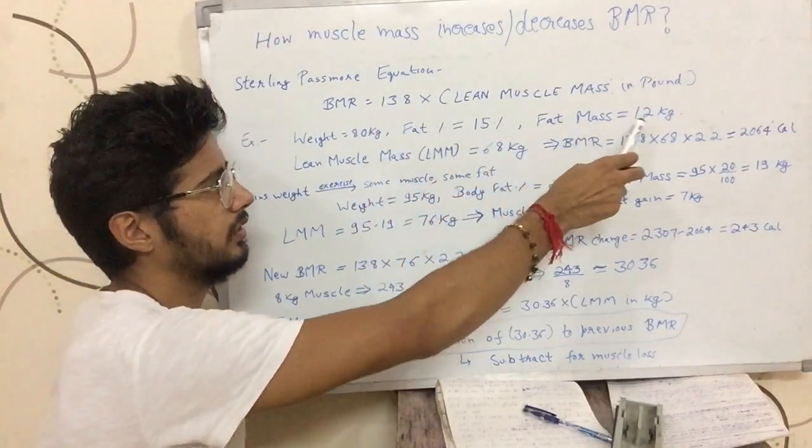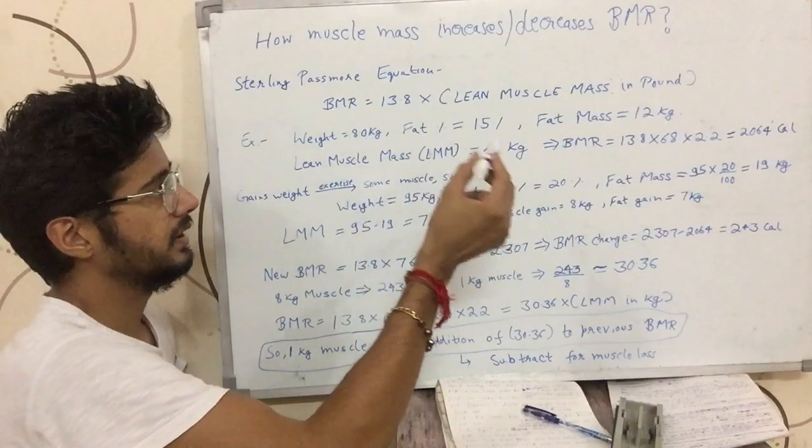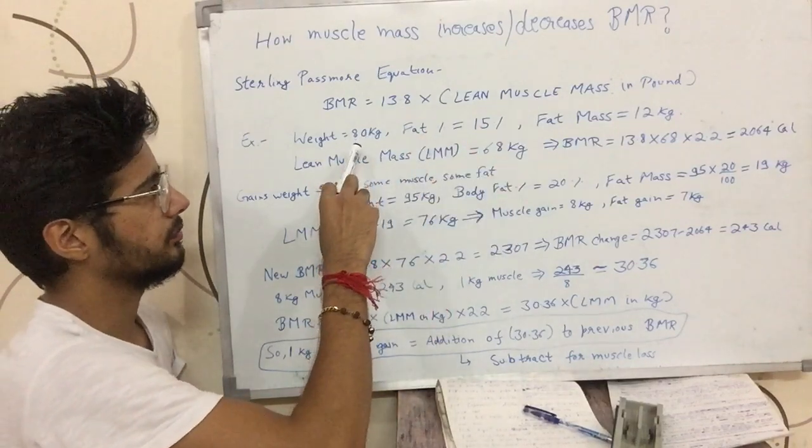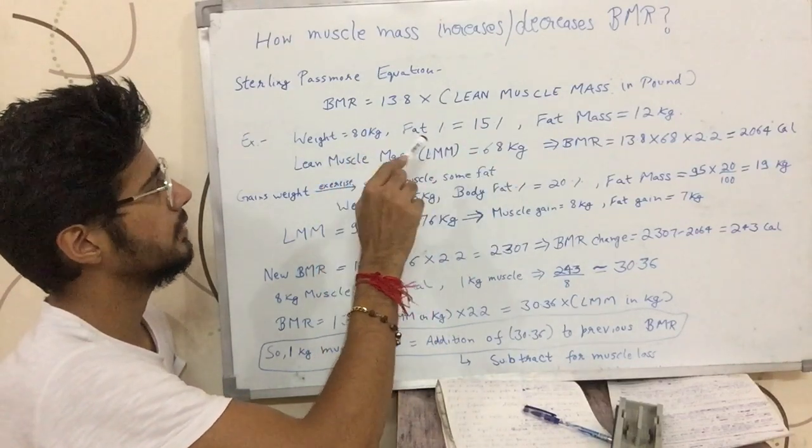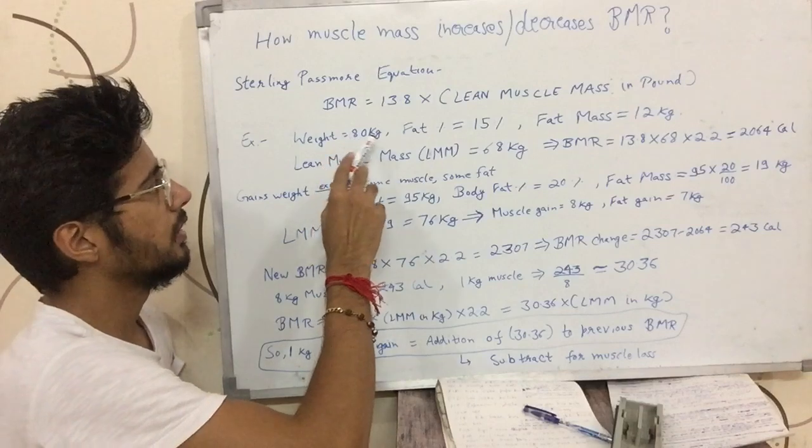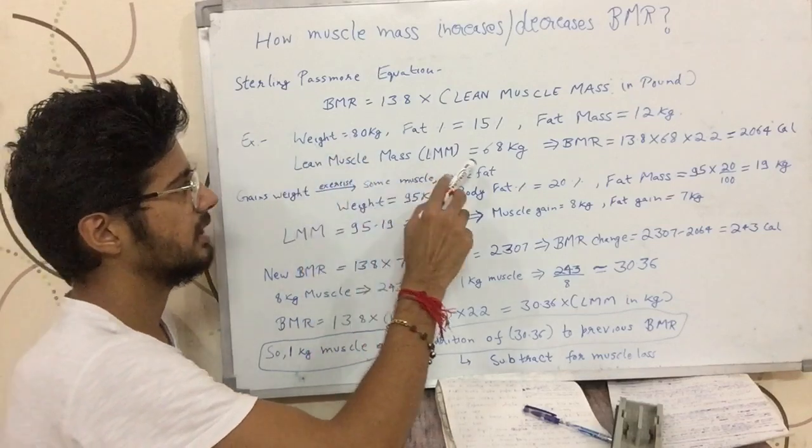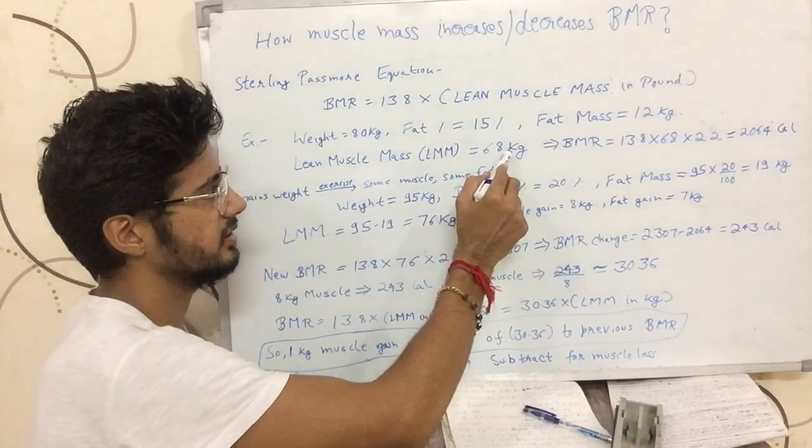The total fat in the body is 12 kgs. When we subtract this fat mass from the total weight, what is left is called lean muscle mass, which comes out to be 80 minus 12, which is 68 kgs.